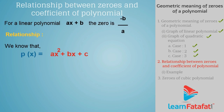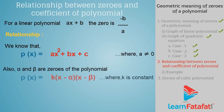Let us find the relationship between zeros and coefficients of a quadratic polynomial. p(x) = ax² + bx + c, where a ≠ 0. Let alpha and beta be the zeros of the polynomial. Then we can say that p(x) = k(x - alpha)(x - beta), where k is a constant. Hence, ax² + bx + c = k(x - alpha)(x - beta).